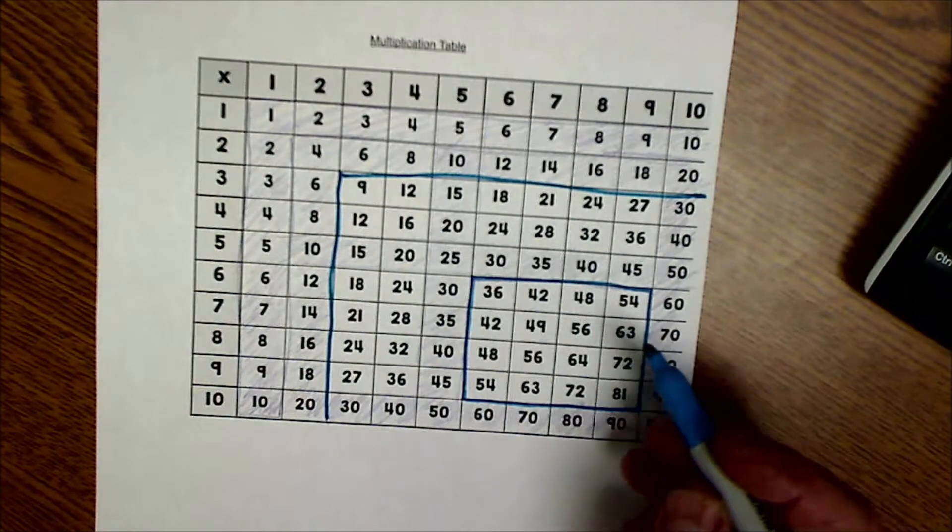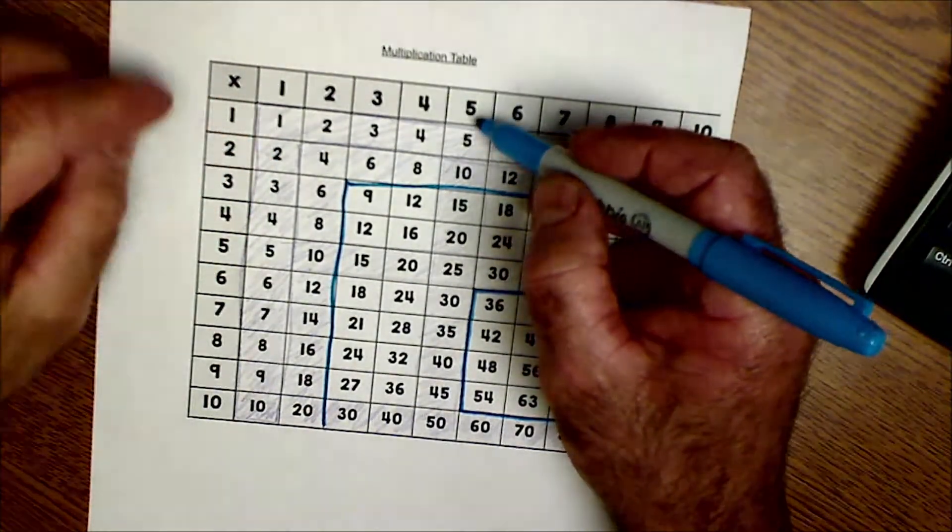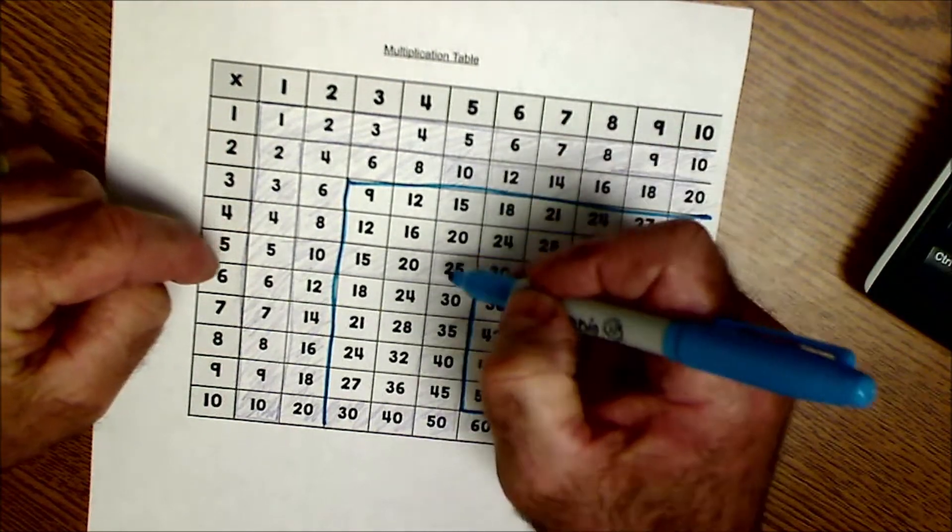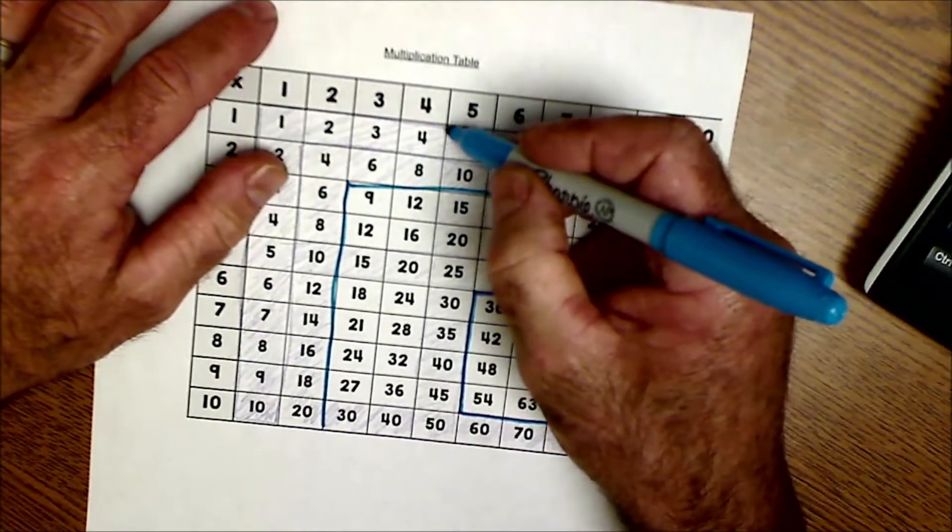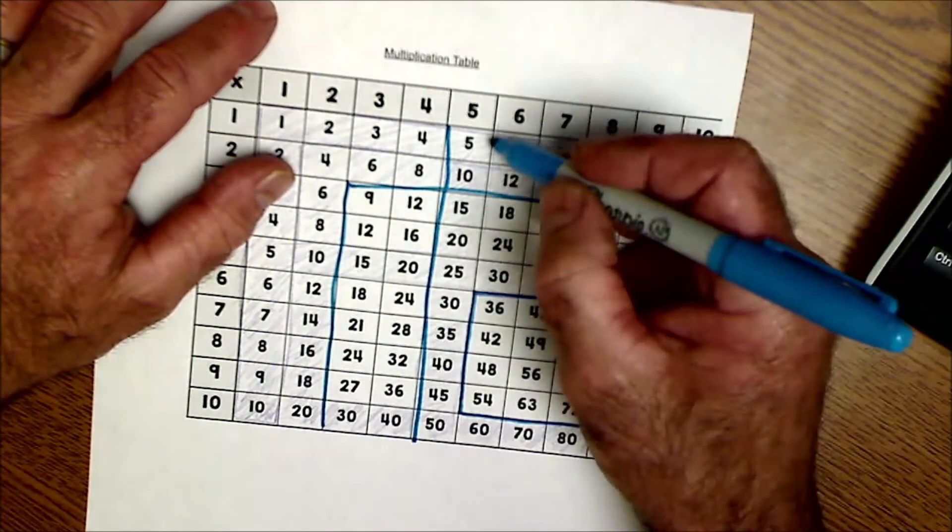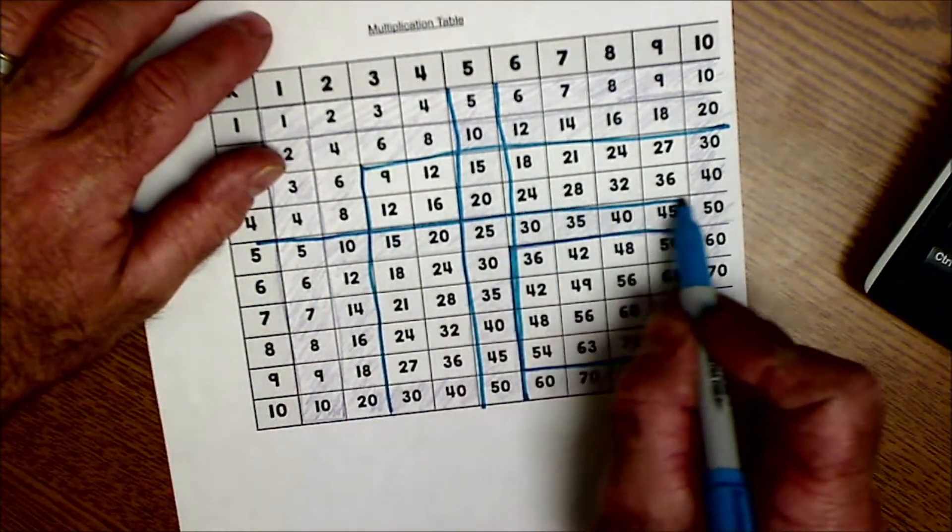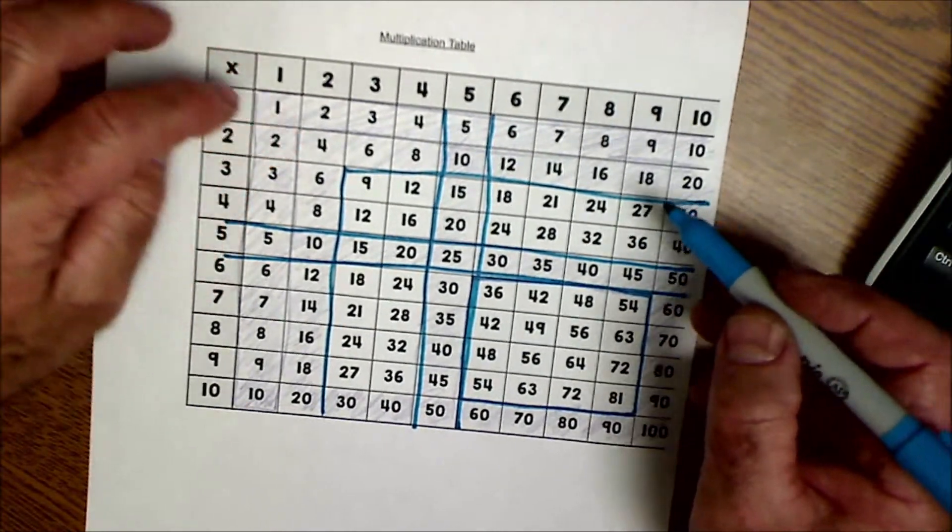The next ones that are easy to do and you should count out are 5's. 5 times anything, it's easy to count by 5. So 5, 10, 15, 20, 25, 30, 35, 40, 45, 50. So those are your 5's. And the 5's this way again is commutative as well. So now we're starting to knock out a lot of these.